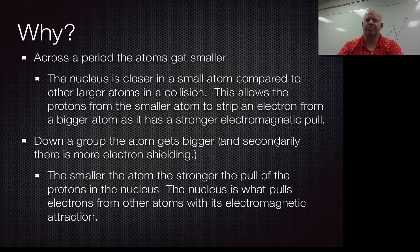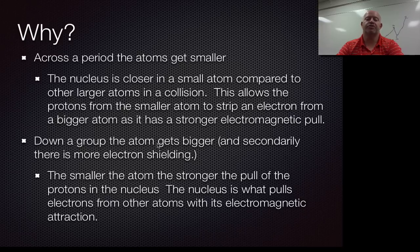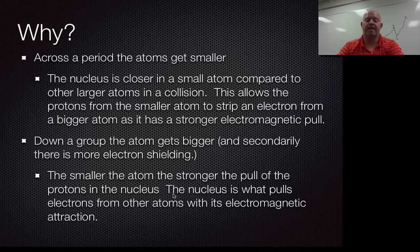there is more electron shielding. So because you have a big atom and more shielding, as you go down the actual periodic table, the ability to gain electrons reduces. So you want the smallest atoms possible to have the highest electronegativity, excluding the noble gases, of course.